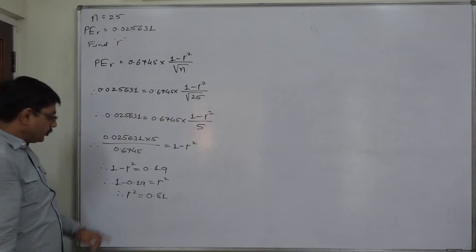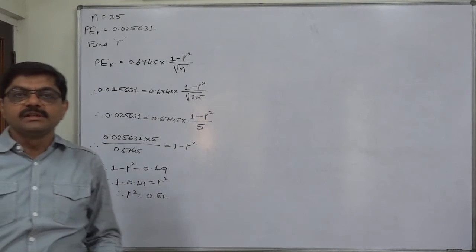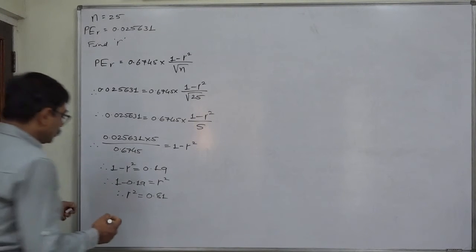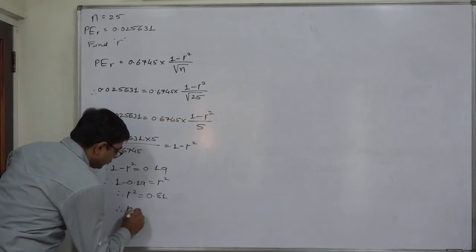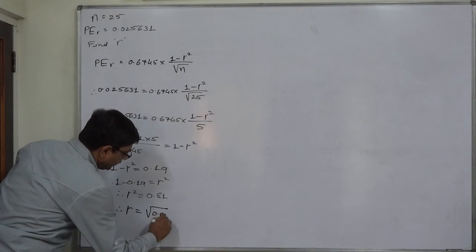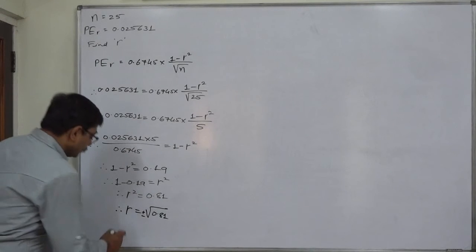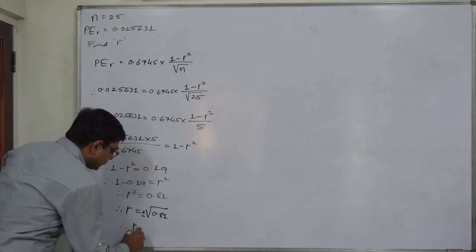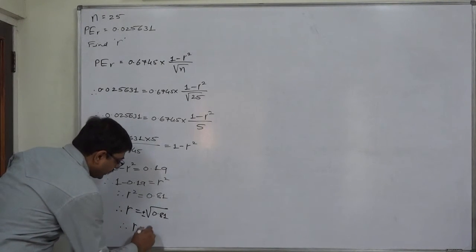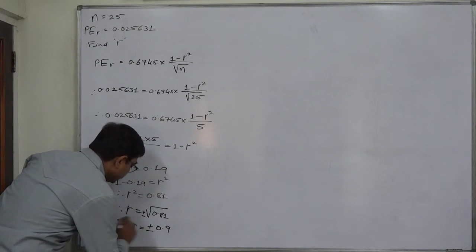We don't know exactly whether the coefficient is positive or negative. The correct answer is r = √0.81, which must be plus or minus. So the final answer is: coefficient of correlation = ±0.9.